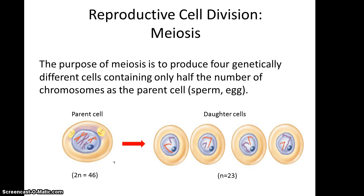We also need to produce cells for the reproduction of the species, and this cellular division process is referred to as meiosis. It will lead to the production of four genetically different cells, and each cell will only have half the number of chromosomes for that species. For humans, they only have 23 chromosomes and are referred to as haploid. These cells are sperm cells produced by men and oocytes or egg cells produced by women.